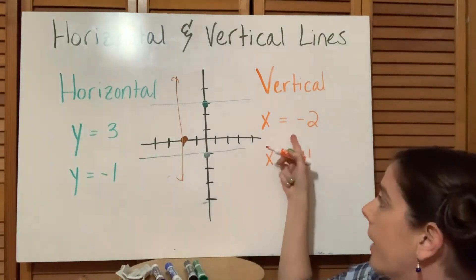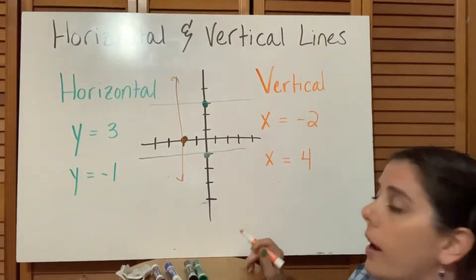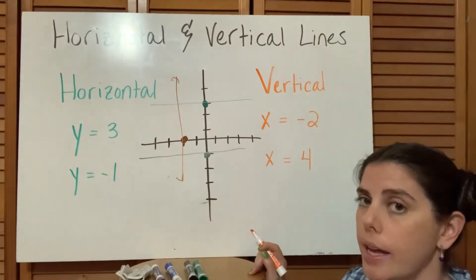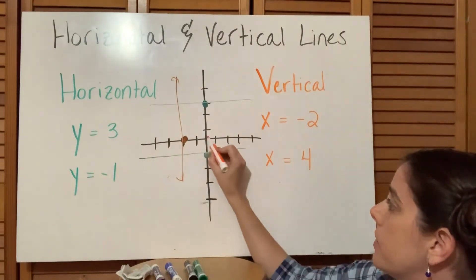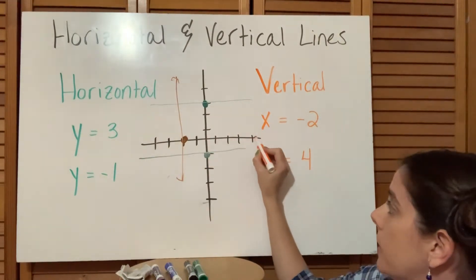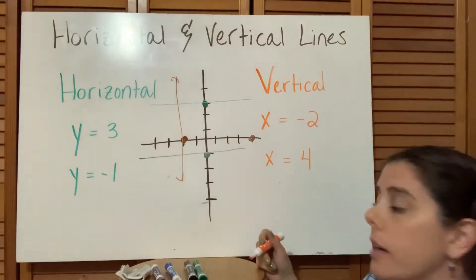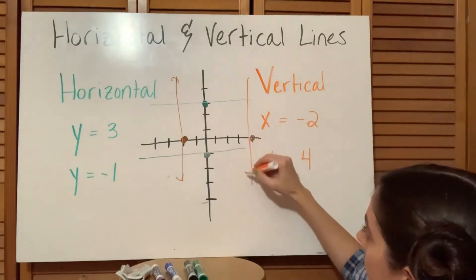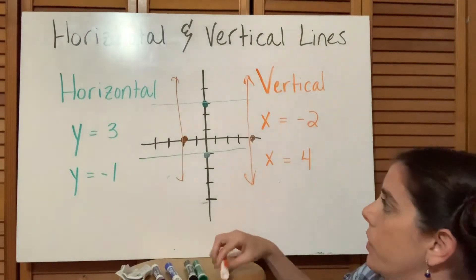We have x equals 4, so the same applies. Start at the origin. The 4 is positive, so we're going to move to the right 4 units on the x-axis. Mark that dot and then just have a line cross through that dot. These are how we can recognize our vertical and our horizontal lines.